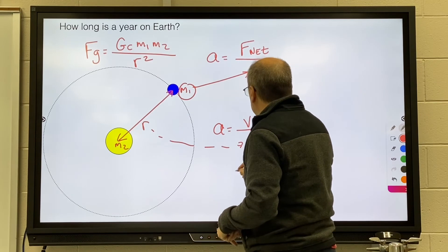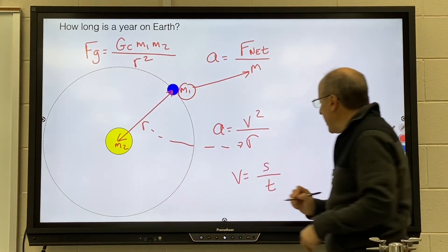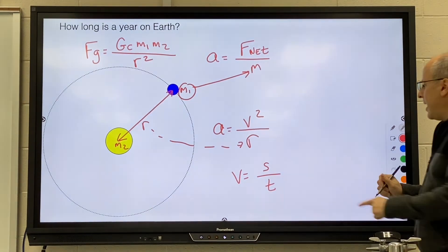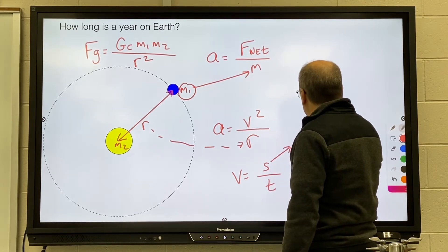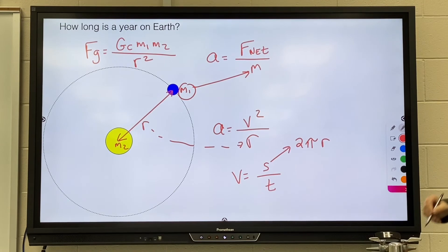Once you get the velocity of the Earth, you're then going to plug it into your circular speed formula. And remember that S is the arc length, and in this case, it would be the circumference of the Earth's orbit.